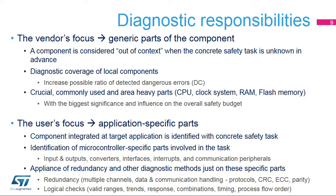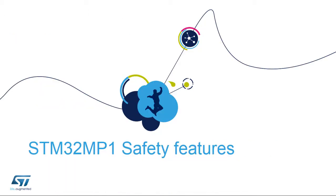Redundancy and knowledge of the system behavior are crucial principles applied either separately or together. Inputs and outputs can be multiplied or checked by feedback, tested for logical state, value, or expected response in trends or time intervals. The processes can be monitored for correct timing and flow order. Correct decisions can be made based on the comparison of results coming from redundant and independent flows, analysis, calculations, or data. The following slides are devoted to features dedicated for safety support.